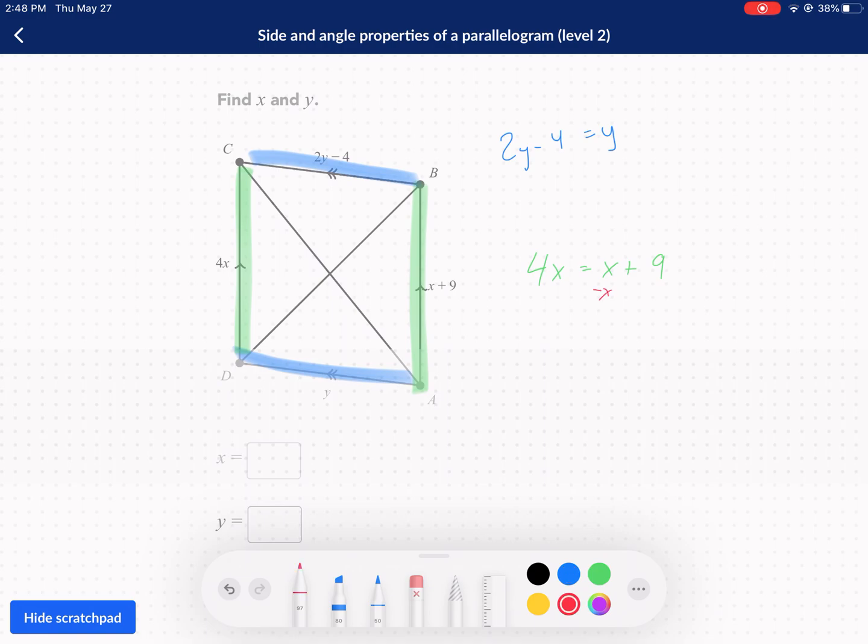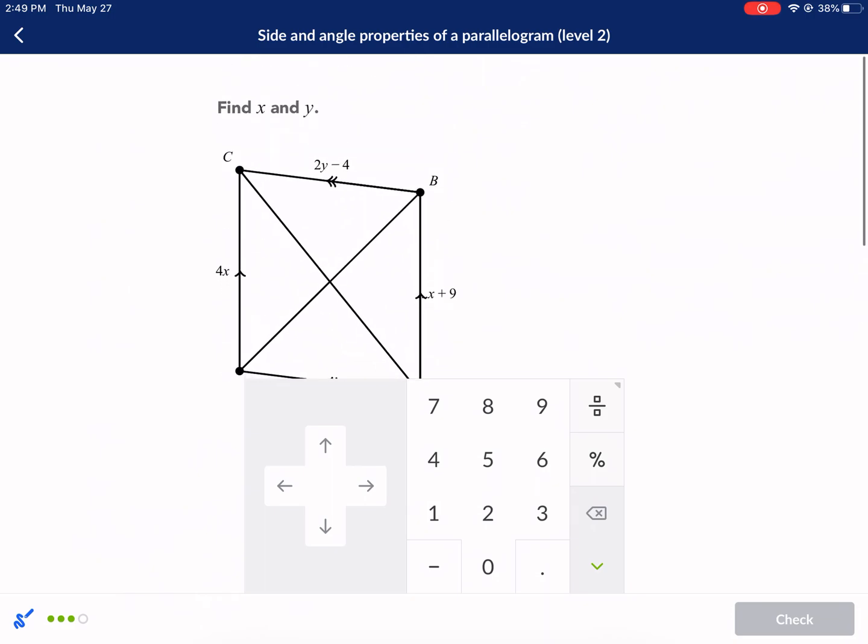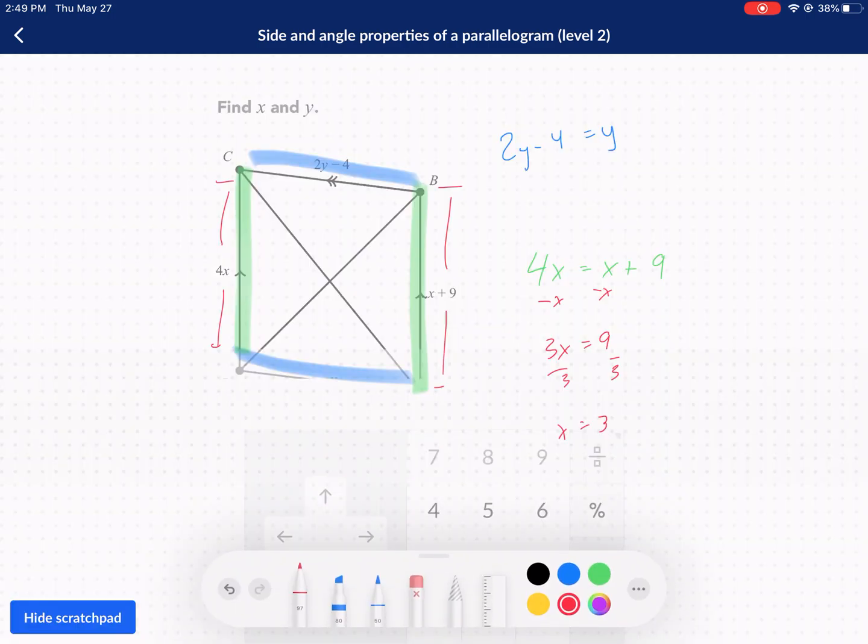What we're going to do here is I like to subtract x. Always start with the variables. That's my suggestion. 3x equals 9. We divide by 3. We're going to get x equals 3. So this whole side length is going to be 4 times 3, 12. This whole side length, 9 plus 3, 12. So we know that's a correct way to do that. So x equals 3. Now let's do the ys.